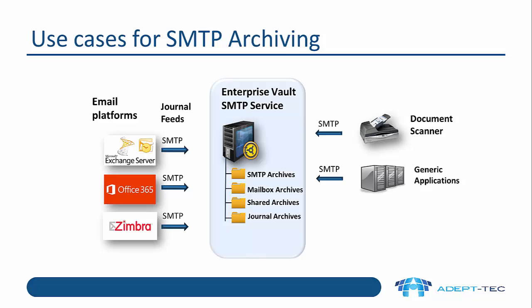SMTP archiving was introduced in Enterprise Vault 11.0.1 — in fact it was one of the main features in that release. What this enables you to do is to run an SMTP service on your Enterprise Vault server which will receive SMTP emails, usually on the standard TCP port 25.